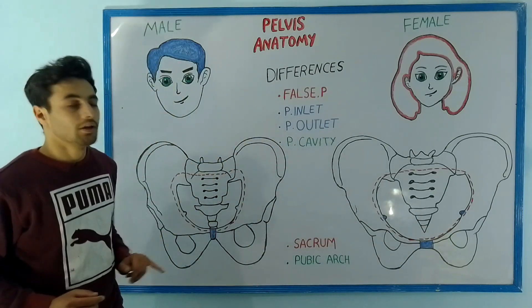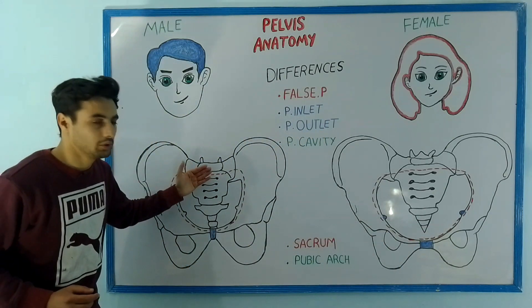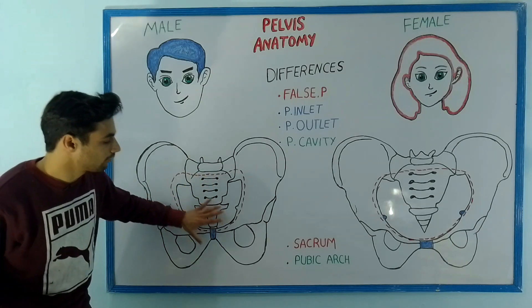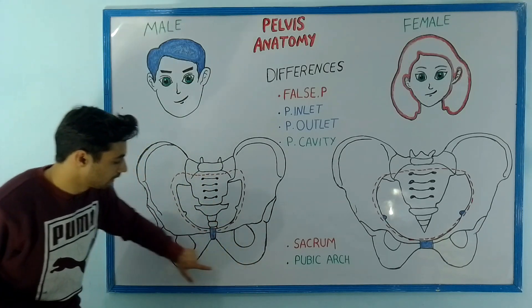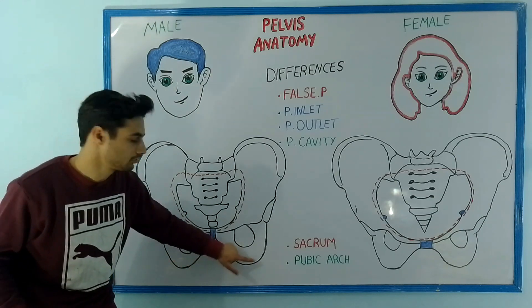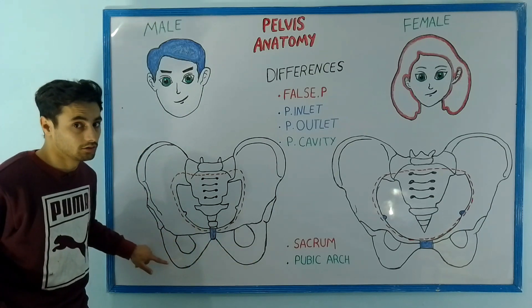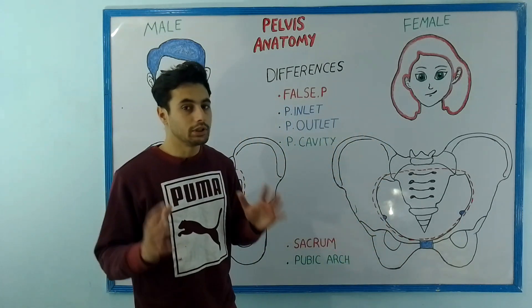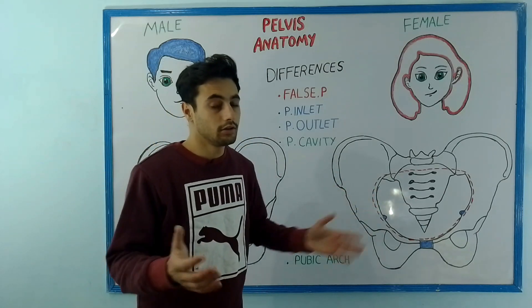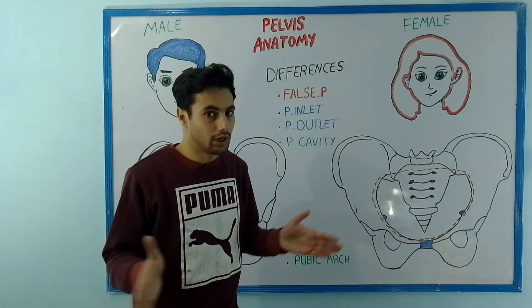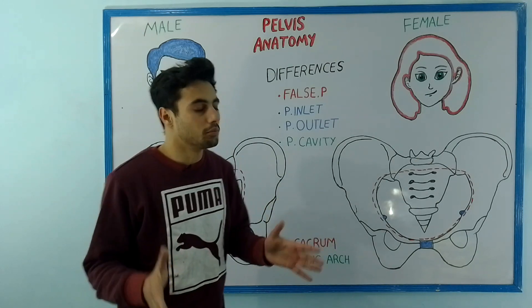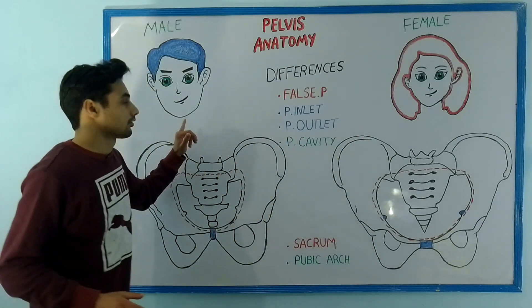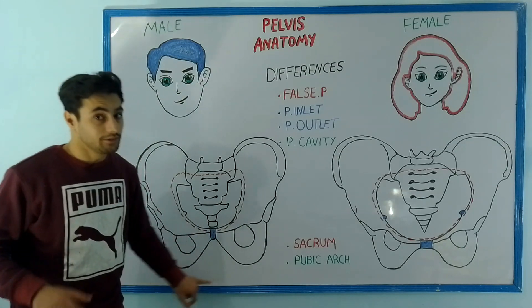Now let us see the pelvic outlet. The pelvic inlet leads into the cavity known as the pelvic cavity, and after the pelvic cavity we have the pelvic outlet. In case of males the pelvic outlet is small, but in case of females the pelvic outlet is large, because the female has to bear the child and during labor the pelvis should be larger so that the child can be easily born.